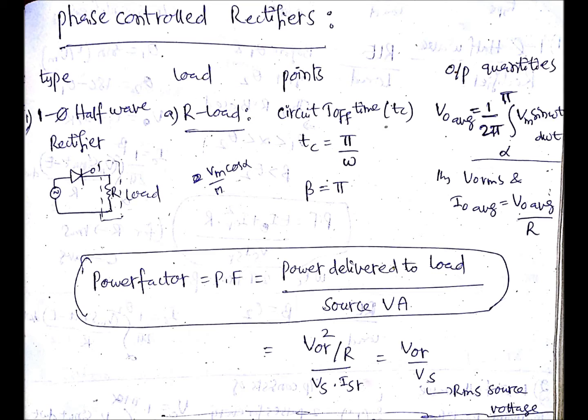Circuit turnoff time should be greater than device turnoff time. This is the time for which a reverse bias voltage is applied across the device, the thyristor. You can turn off an SCR only when reverse bias voltage is applied across it.